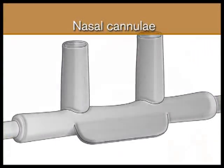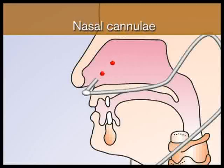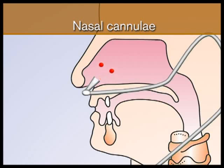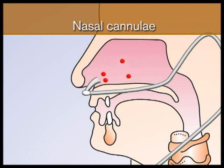Straight prongs are the original design and are still the most frequently used in hospitals. Curved prongs are designed to direct the flow of oxygen posteriorly rather than upward towards the frontal sinuses. Flared prongs have an increased diameter towards the tip, which has the effect of slowing down the gas as it enters the nose, making it more comfortable for the patient. Curved and flared prongs combine the best features of the two options, releasing oxygen more slowly and away from the frontal sinuses.